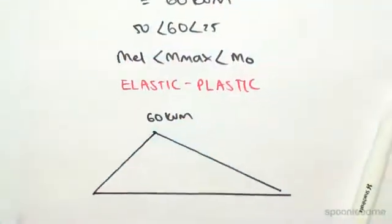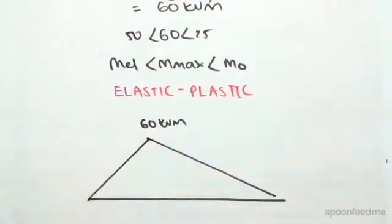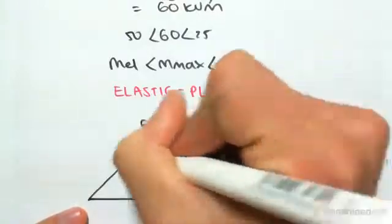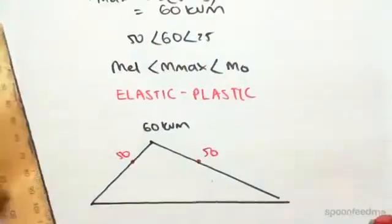We know that the elastic limit is 50 kilonewton meters. So at 50, which will be around there and there. So that's 50 and 50. If we were to drop down, this region in here is now plastic.